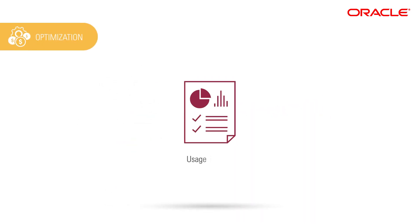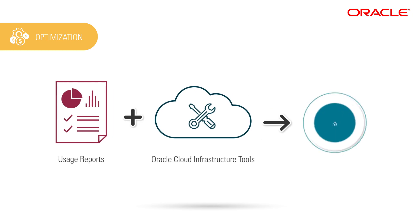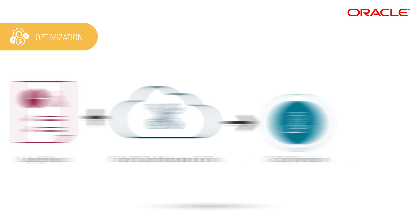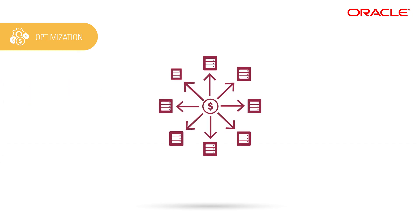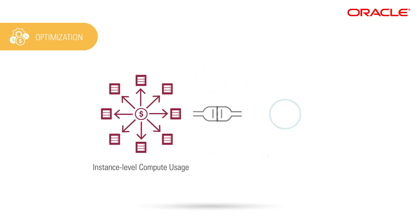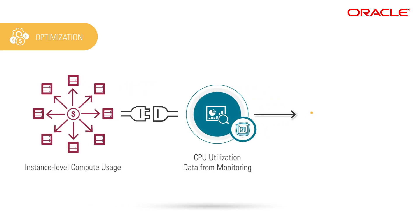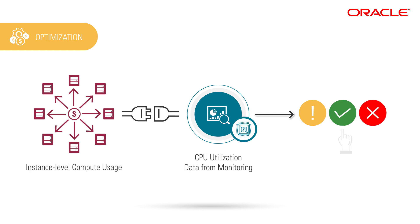Because usage reports provide such granular detail, Janet can leverage it along with other Oracle Cloud Infrastructure tools to do cost optimization. For example, she merges the instance-level compute data from the usage report with the instance-level CPU utilization data from Oracle's monitoring service to identify the most expensive compute instances that have the lowest CPU utilization rates. Based on this intelligence, she's able to provide recommendations on where to save money.